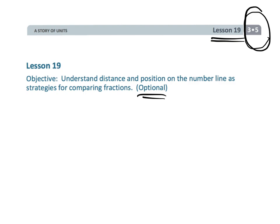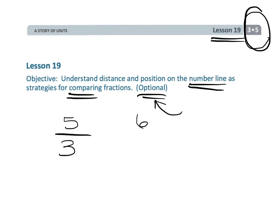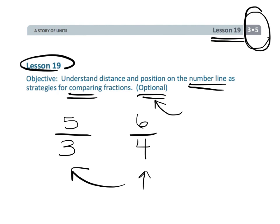Now, teachers, the reason this is an optional lesson, I believe, is because we are using number lines to compare fractions. Those are definitely parts of the standards for third grade Common Core. But what makes this lesson optional is that some of these fractions have different denominators from each other. For example, students are being asked to compare like five-thirds and six-fourths. And that makes it optional — that our denominators are different. But I like this lesson anyway because it really is still developing that number sense for our students, where they are using the number line to compare fractions. They're not using some algorithm mindlessly without really understanding why it works.